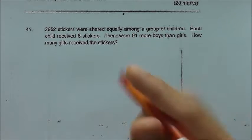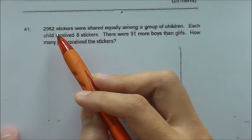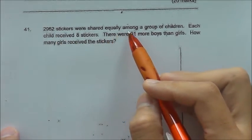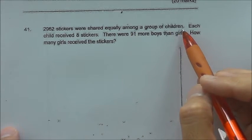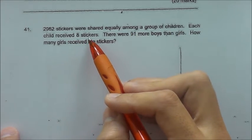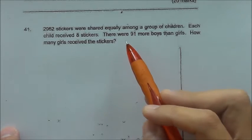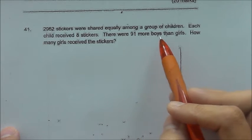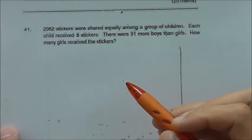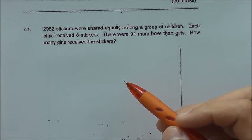Question 41. 2,952 stickers were shared equally among a group of children. Each child received 8 stickers. There were 91 more boys than girls. How many girls received the stickers?